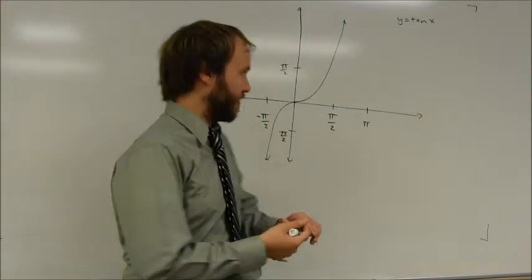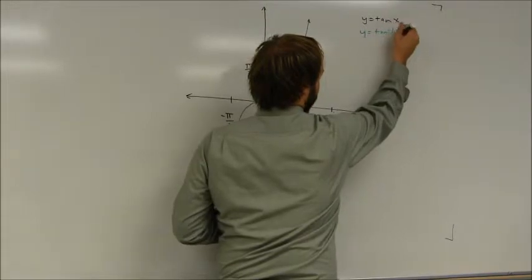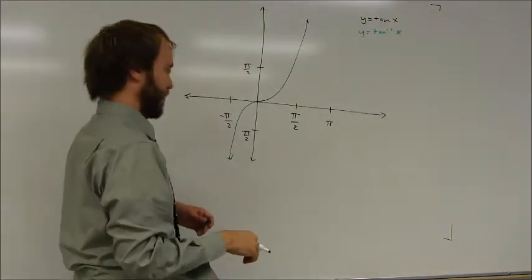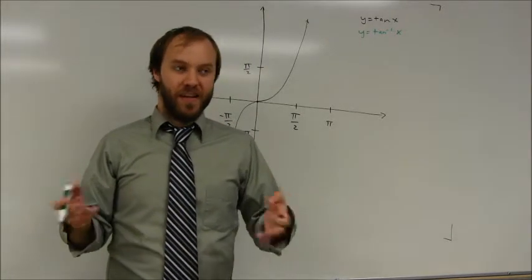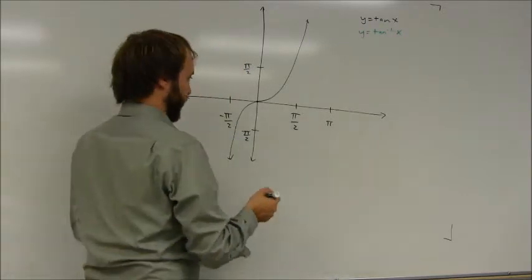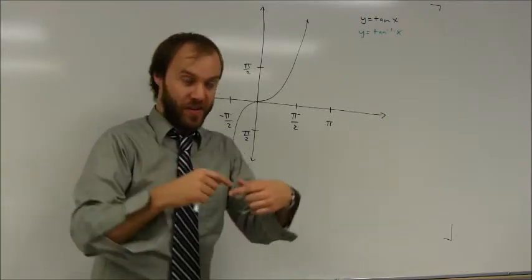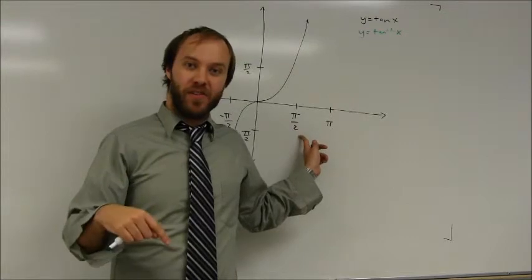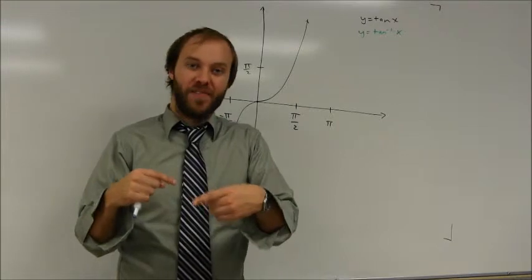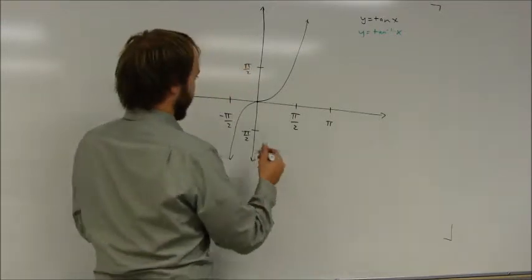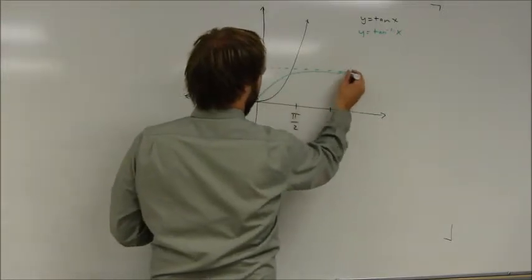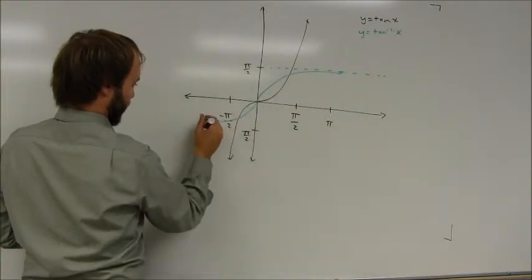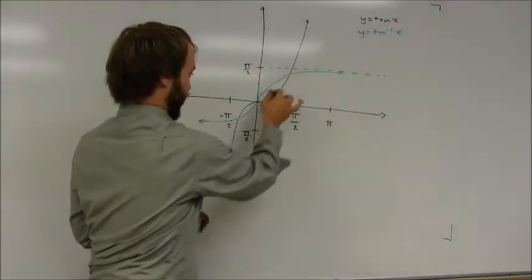I can do similar things to graph the inverse tangent function. If I wanted to graph y equals inverse tangent of x, again I can plot points. The point (0, 0) is on the tangent graph, so it would be on the inverse tangent graph. For example, the tangent of pi over 3 — tangent of 60 degrees — is equal to radical 3. So on the inverse graph you basically switch those input and output values. As x approaches pi over 2, the y value approaches infinity — that's going to flip-flop. As the x value approaches infinity, the y value is going to approach pi over 2. That's going to look something kind of like this, with an asymptote right here, and it's going to approach negative pi over 2 as y approaches negative infinity. So it's this kind of S-shaped graph.